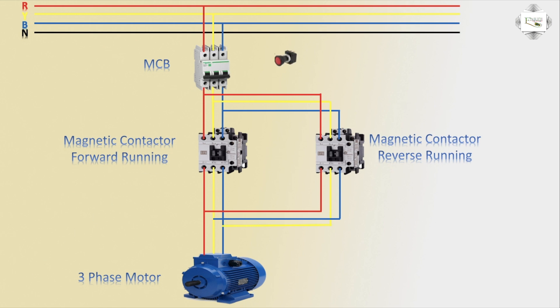Switching connection: first switch is the stop switch. Motor running forward or reverse — stop switch stops all. Then push switches: RS means reverse switch, FS means forward switch.